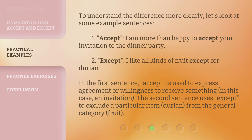In the first sentence, accept is used to express agreement or willingness to receive something — in this case, an invitation. The second sentence uses except to exclude a particular item, durian, from the general category, fruit.